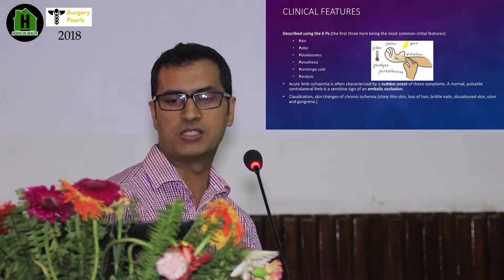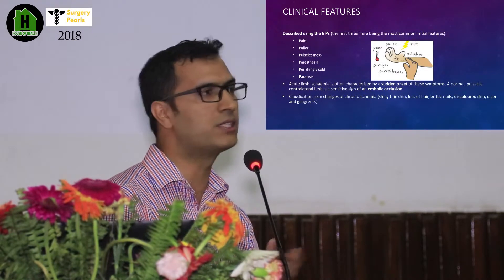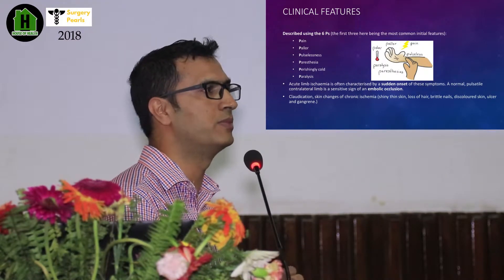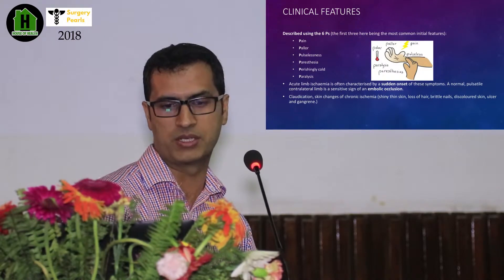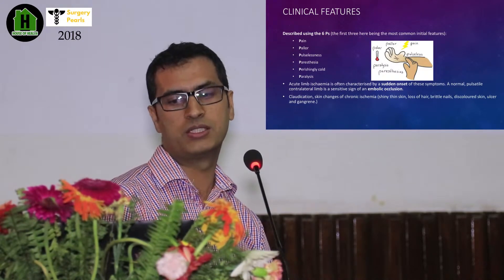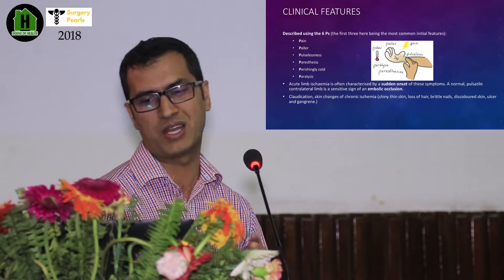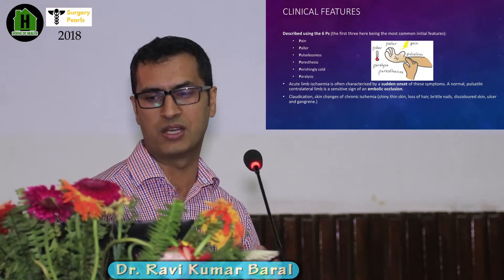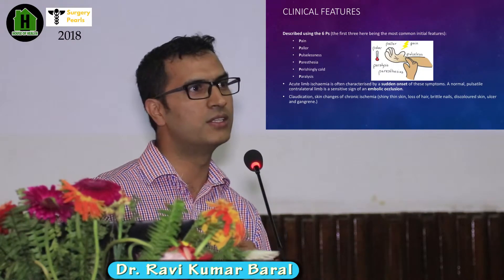Color change, paresthesia, and coldness are more common in patients presenting with chronic critical limb ischemia. Claudication, ischemic skin changes, loss of hair, brittle nails, discoloration, ulcers, and gangrene are also more common in chronic critical limb ischemia.